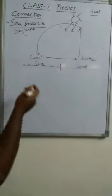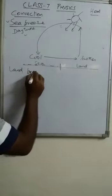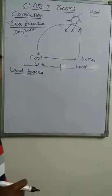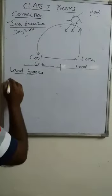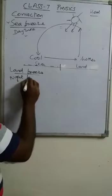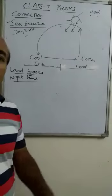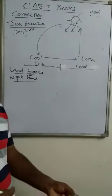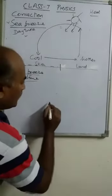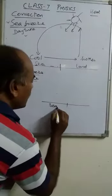Coming to the land breeze — land breeze also occurs on the same principle of convection, but it occurs during nighttime. During nighttime, cool air also blows on the seashore. Let us see how it takes place. This is once again the sea and the land.